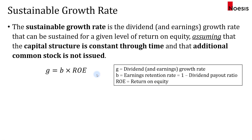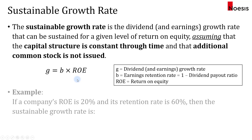Analysts commonly assume that the rate of return is well approximated by the return on equity. As an example, if a company's ROE is 20% and their retention rate is 60%, then the sustainable growth rate is calculated as 60% times 20%, which is 12%.